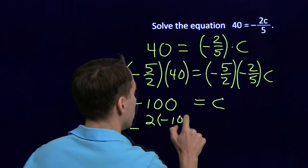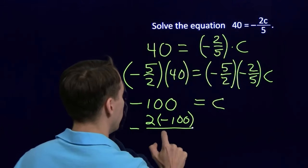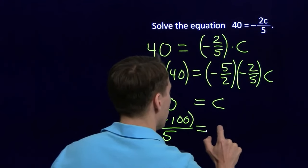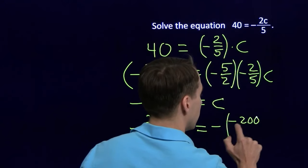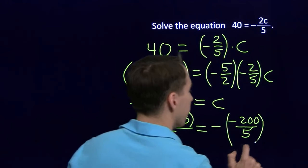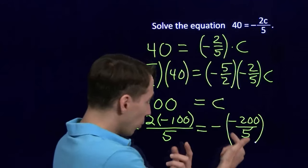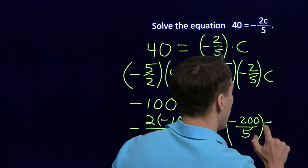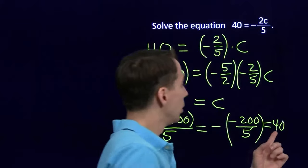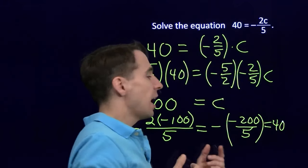Negative 2 times negative 100 over 5. Let's multiply this out. We have negative, this is negative 200 over 5. Negative 200 over 5, that gives us negative 40. And then we negate it again. That gives us 40 back. It matches up, and we're done.